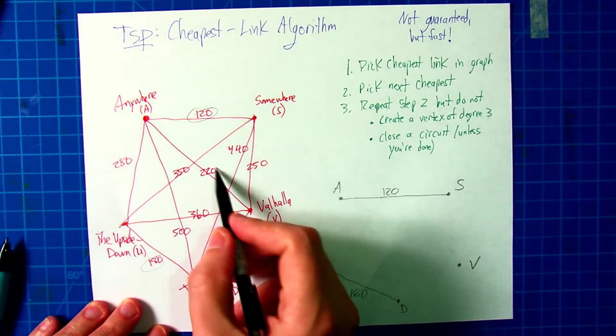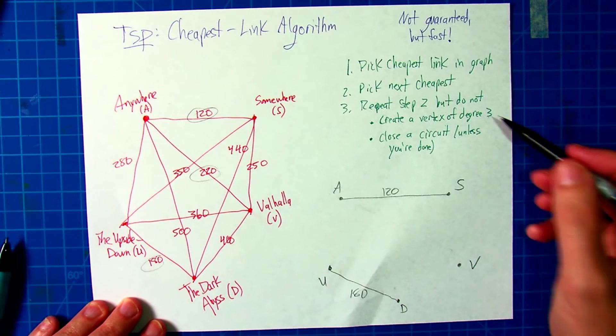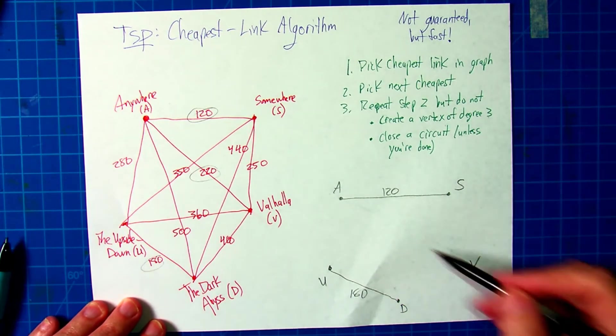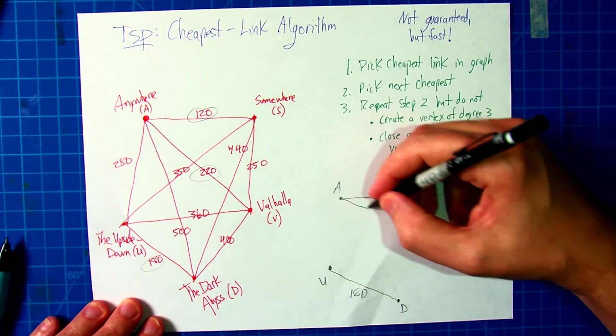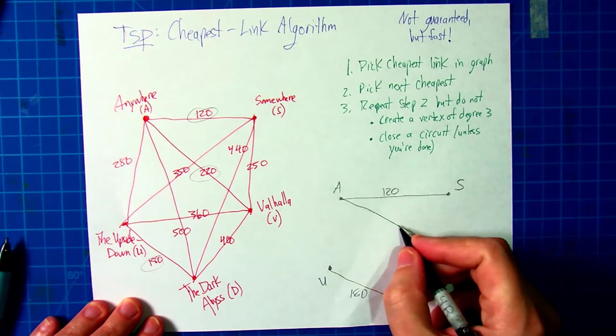What is the next cheapest in this graph? It's 220. Is that going to create a vertex of degree three? No. Is it going to close a circuit? No. So we can definitely add in that 220 as well.